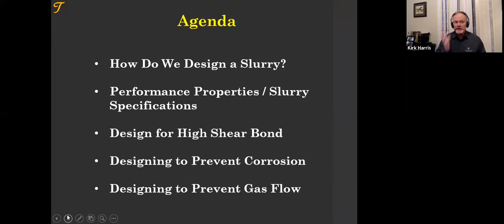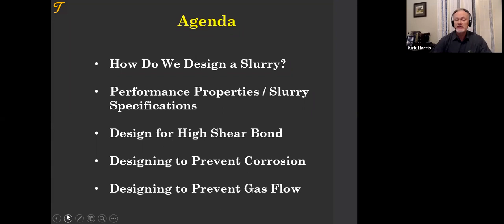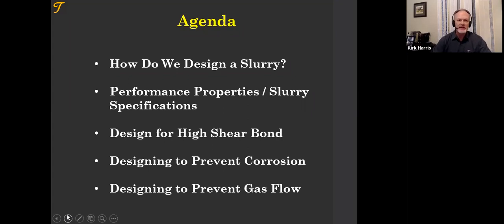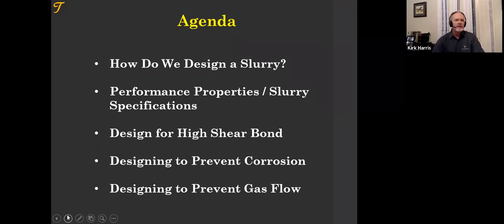Moving forward, tonight's agenda covers how to design a slurry — where do we start, how do we do it — talking about slurry specifications. Two weeks ago we talked about testing; we tested for a reason, to meet some sort of target. Now we have to pick the right targets, then focus on three specific design issues: how to get high shear bond, preventing corrosion around CO2 sequestration, and designing to prevent gas flow.